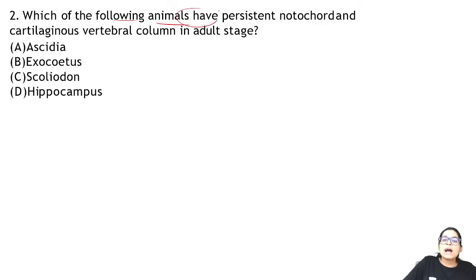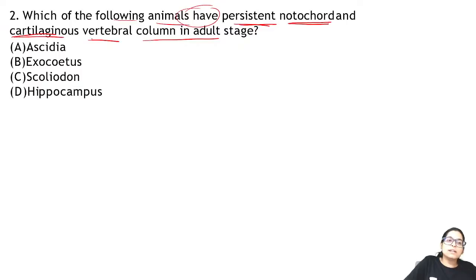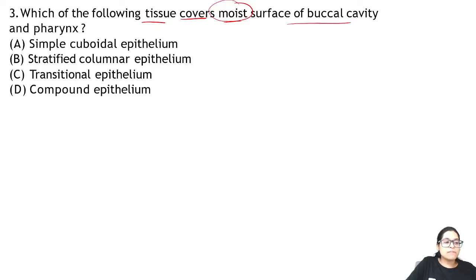Zoology Question 2: which of the following animals have a persistent notochord and cartilaginous vertebral column in adult stages? The answer is Scoliodon. Question 3: which tissue covers the moist surface of buccal cavity and pharynx? The answer is compound epithelium — it covers the moist surfaces.